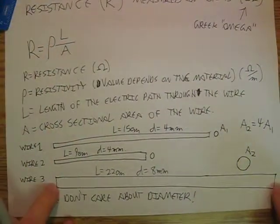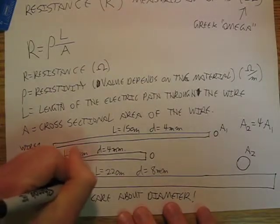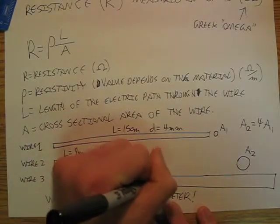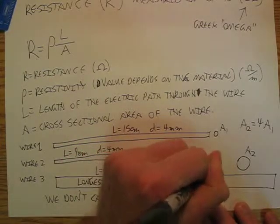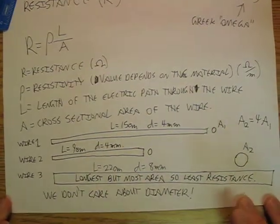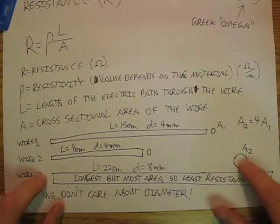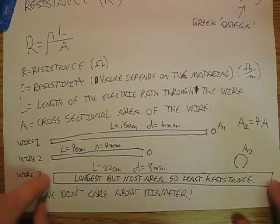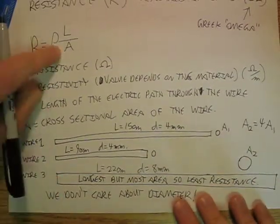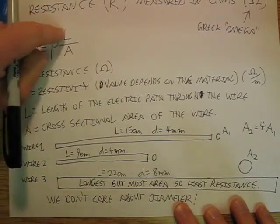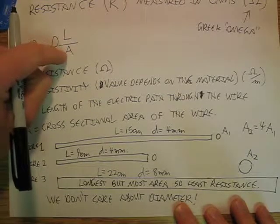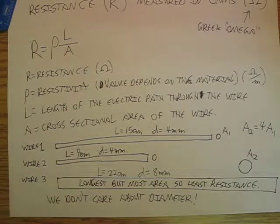So wire 3 is longest but most area so least resistance. Even though this wire is longer, it's got 4 times more area than any of these things. So it's twice as long as this wire, more than twice as long as this wire but it's got 4 times as much area. So if I go up to that equation, I'm plugging in something that's like 2 times as much up here but I'm plugging in something that's 4 times as much down here.